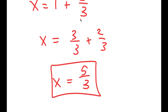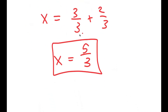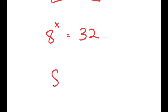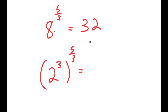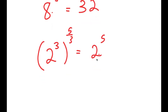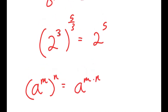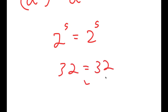Now, how do we know this is the right answer? Going back, we have 8 to the power of x equals 32, and we plug in 5 over 3. So 8 to the power of 5 over 3 equals 32. Since 8 is 2 to the power of 3, we get 2 to the power of 3 to the power of 5 over 3. Using the rule a to the m to the n equals a to the m times n, the 3s cancel, giving 2 to the power of 5 equals 2 to the power of 5, or 32 equals 32. This confirms the answer is correct.